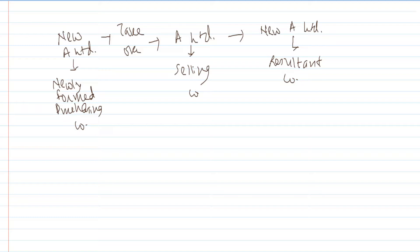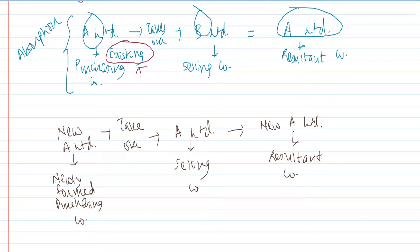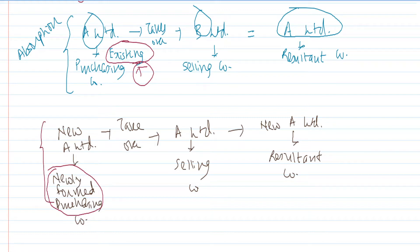A company is not doing financially well, so the management of that company itself will float a new company, and this new company will take over the existing financially weak company to revive its business — that is external reconstruction. It will be a newly formed purchasing company. You may wonder if this is like absorption, but no — in absorption the purchasing company has to be an existing company, whereas in external reconstruction it is a newly formed company, floated by the same management.